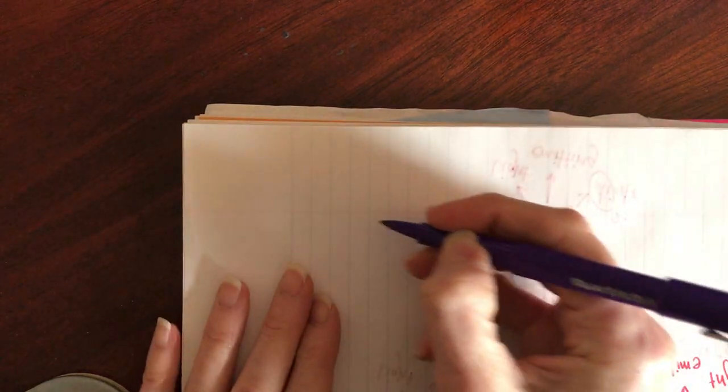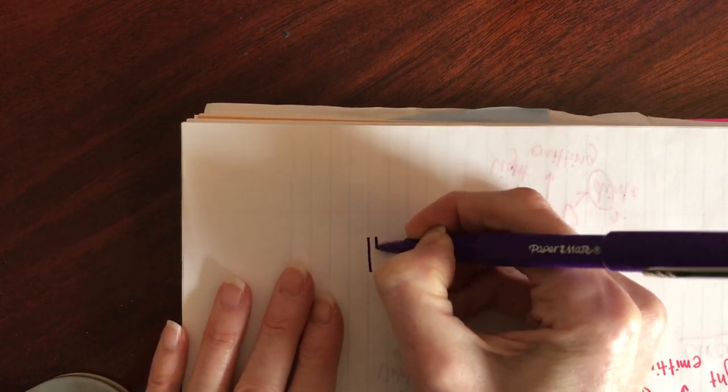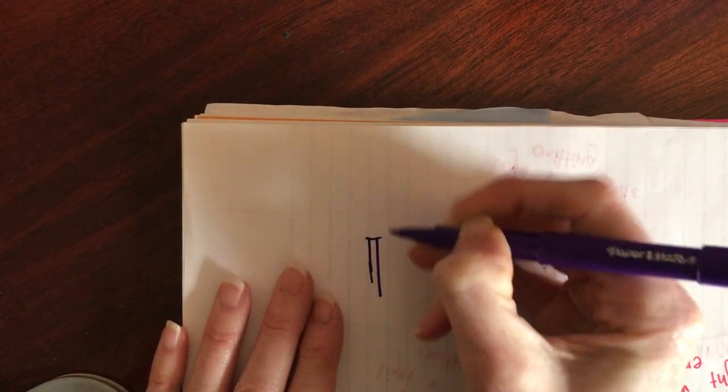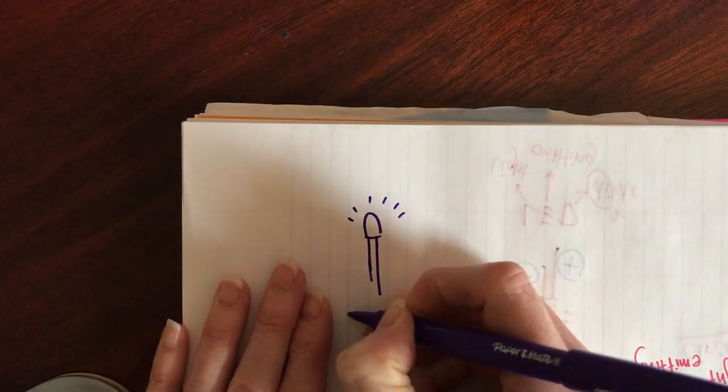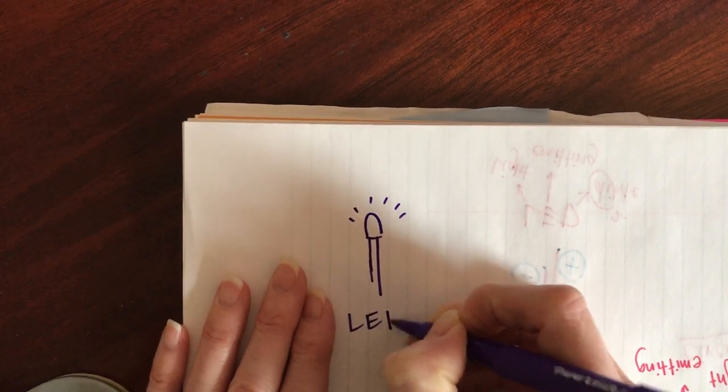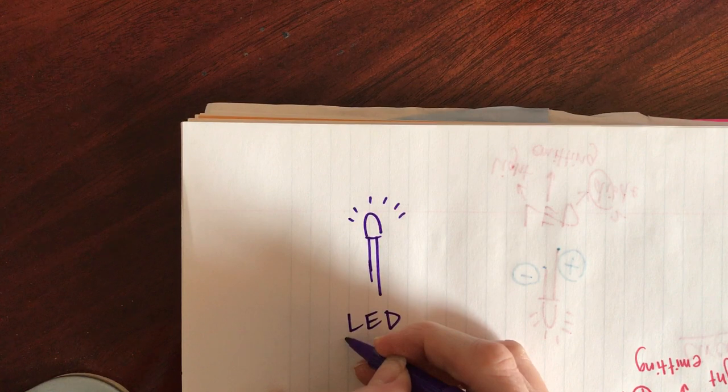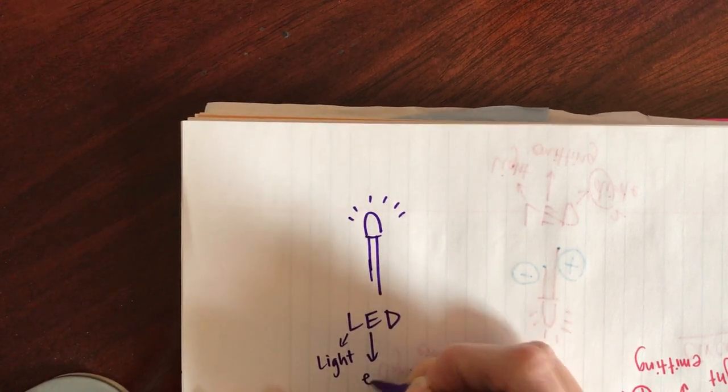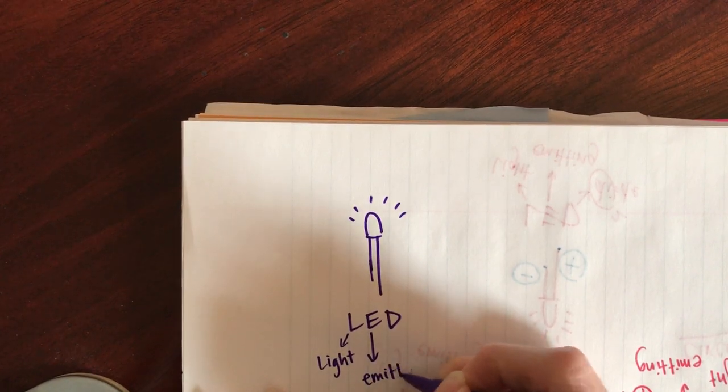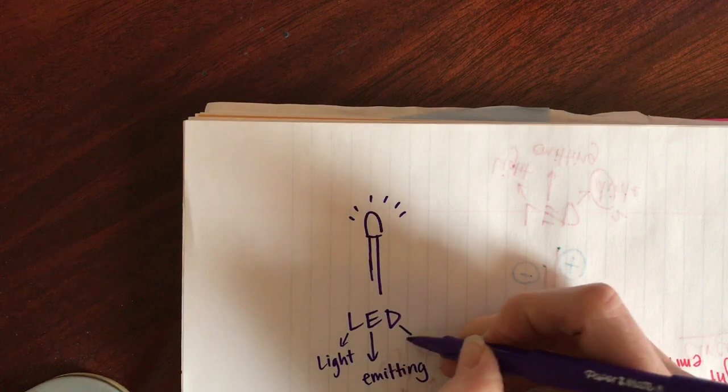So a couple of terms to learn and a couple of things to learn about the way the LEDs work. So you're gonna be working with, I'm just gonna do a quick sketch here, of an LED and this is called an LED. And an LED actually stands for a light emitting, emitting means to give off, so a light emitting, it gives off light, diode.